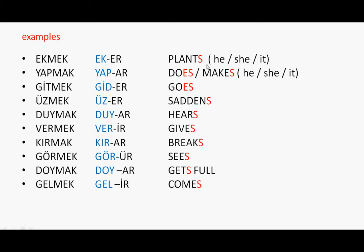For example: he, she, it plans; or he, she, it makes or does. That's why in Turkish we add only the suffix. O eker, O yapar, O gider — meaning he plans, he does, he goes, for example.